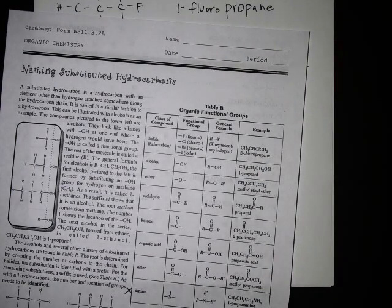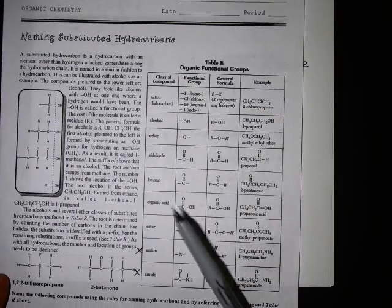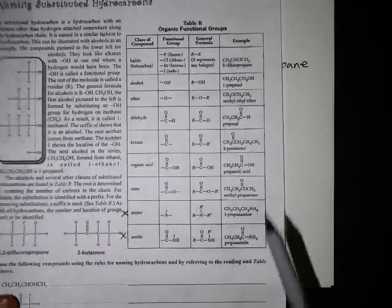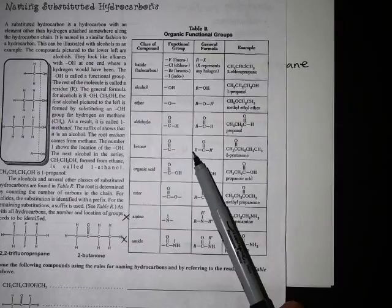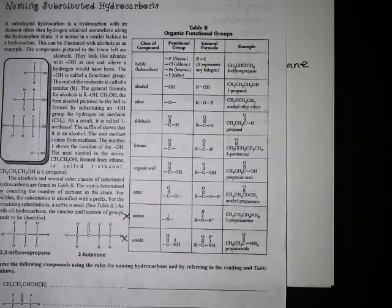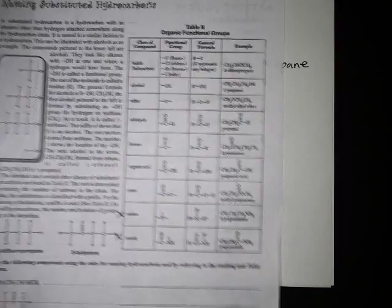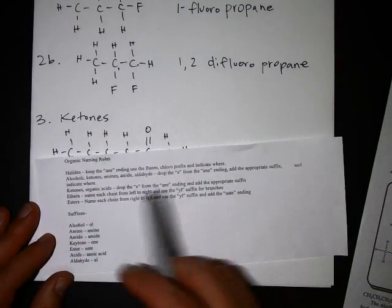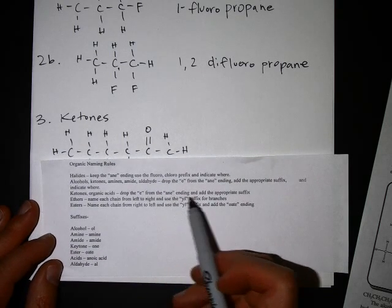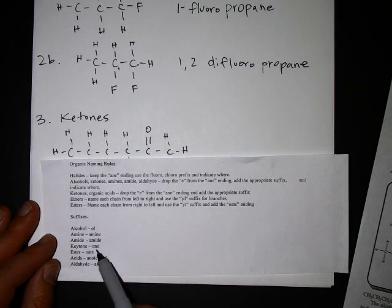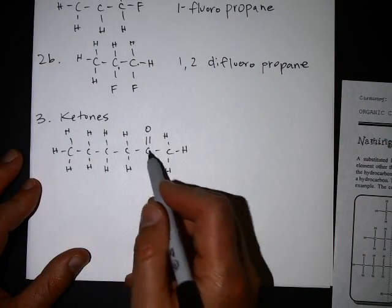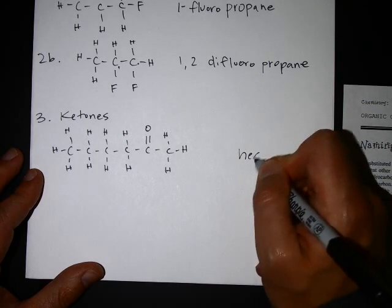Refer to this sheet to identify a ketone. A ketone has some carbons on one side, some carbons on the other side, and in between is a carbon double-bonded to an O — that's what a ketone is. The rules for ketones: drop the E from the -ane ending and add the appropriate suffix. For a ketone the suffix is -one. So we count: one, two, three, four, five, six carbons — that's hexane.